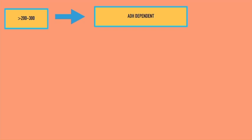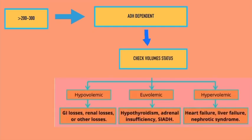In case of ADH-dependent hyponatremia, the next thing you should assess is the volume status of the patient — that means hypovolemic, euvolemic, or hypervolemic. Hypervolemia due to heart failure, liver failure, and nephrotic syndrome is evident with raised JVP, pedal edema, and ascites. Severe hypovolemia is also evident with hypotension and orthostasis.